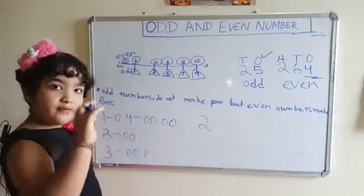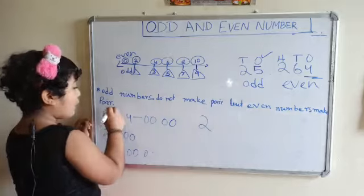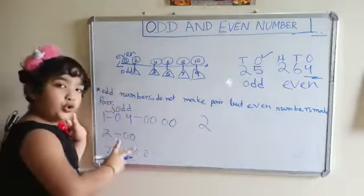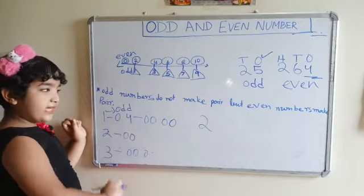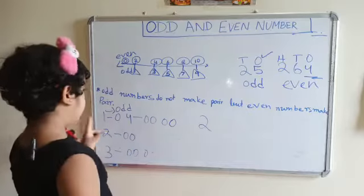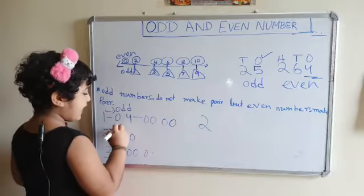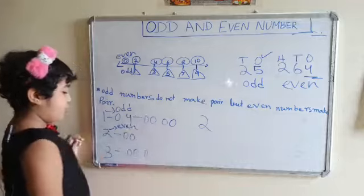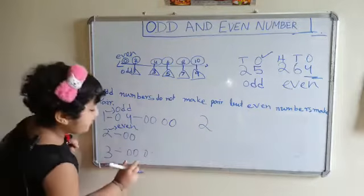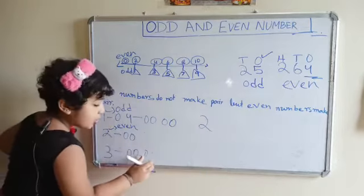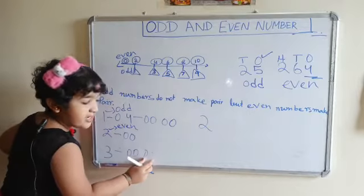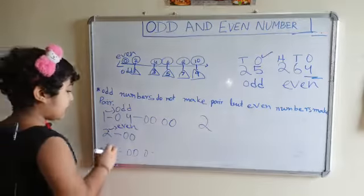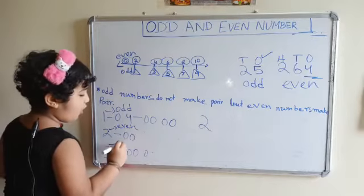तो one तो pair नहीं बन सकता, और यह odd है. Two तो हो सकता है ना? क्योंकि एक pair हुआ — और यह एक even number है. Three में एक pair हो गया, लेकिन दूसरा pair कैसे बनेगा? यहां तो एक बचा है ना, तो यह भी नहीं बन सकता — यह एक odd number है.